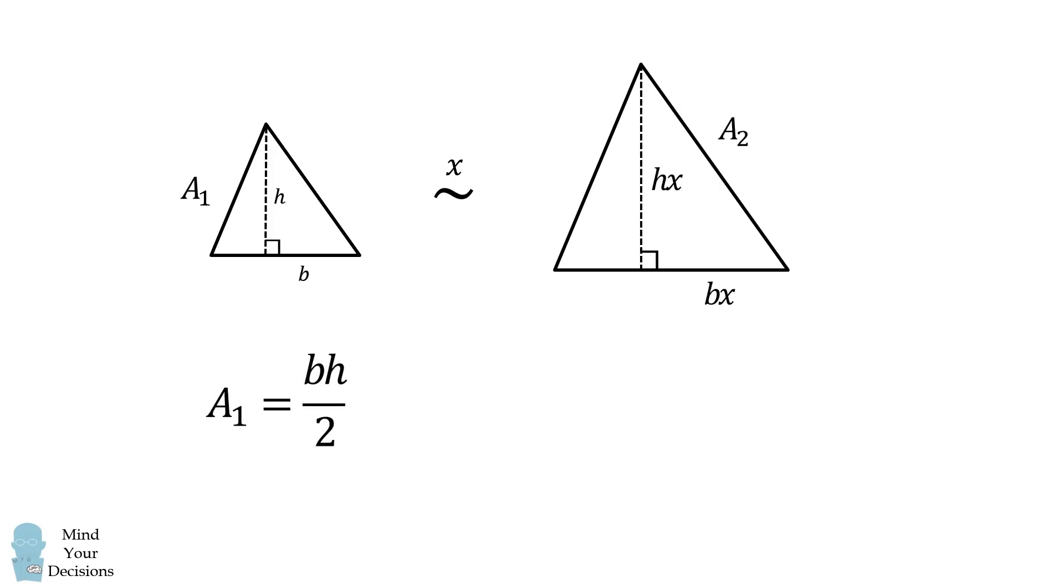Now a1 is equal to bh over 2, and a2 is equal to bx multiplied by hx over 2. In the formula for a2, we can group the x terms, so we have bh multiplied by x squared. We can then rearrange this formula, and we have bh over 2 multiplied by x squared. But bh over 2 is exactly equal to a1. So we can substitute here, and thus we've proven that a2 is equal to a1 multiplied by x squared.